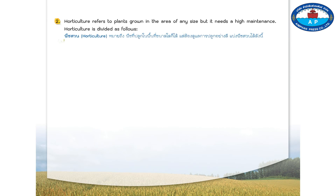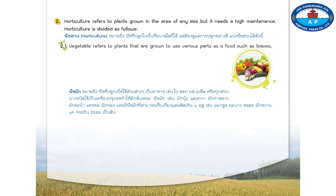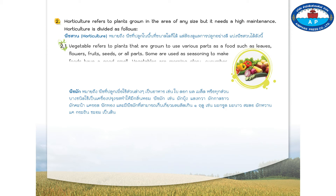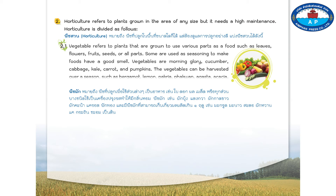Number two, horticulture refers to plants grown in an area of any size but needing high maintenance. Two point one, vegetables refers to plants that are grown to use various parts as food such as leaves, flowers, fruits, seeds, or all parts. Some are used as seasoning to make food have a good smell. Vegetables include morning glory, cucumber, cabbage, kale, carrot, and pumpkins. Vegetables that can be harvested over a season include bergamot, lemon, and others such as agasta, acacia, and acacia panada.